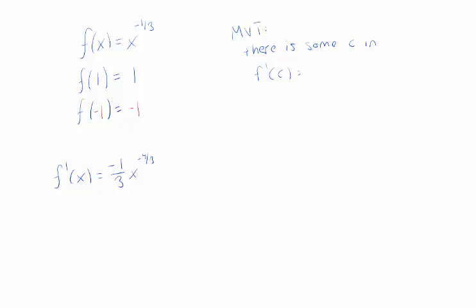And if I try to apply the mean value theorem, it'll tell me there's some c between minus one and one, so that the derivative of my function is equal to f of one minus f of minus one over one minus minus one, because this is the average rate of change, and this would give us one.